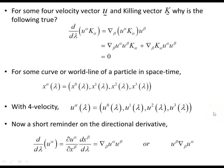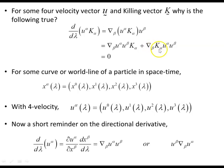For some four-velocity u and a Killing vector k, why is the following equation true? What we're going to find is that it involves the covariant derivative of the Killing vector with a lowered index. This is an anti-symmetric tensor, and this plays a role in why this equation equals zero.